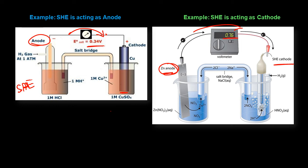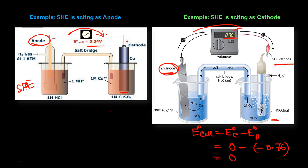For copper, the voltmeter reads 0.34 V, which matches the electrochemical series value for the Cu²⁺/Cu system. For zinc, you might expect −0.76 V, but when calculating cell EMF, E_cell equals E_cathode minus E_anode. With SHE as cathode (0.00 V) and zinc as anode (−0.76 V from the series), subtracting a negative gives a positive value of 0.76 V. Don't be confused by the sign — it depends on this calculation.